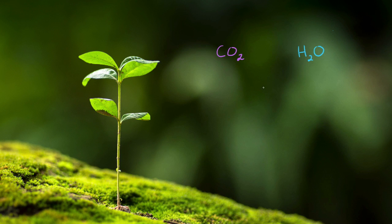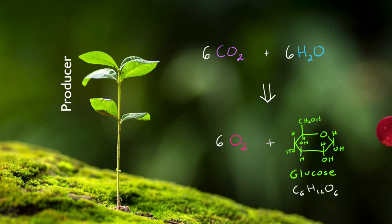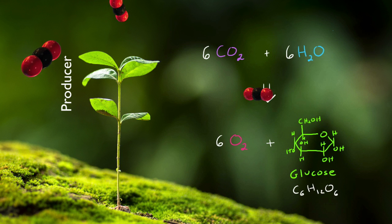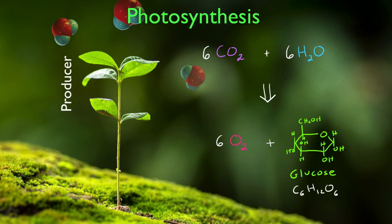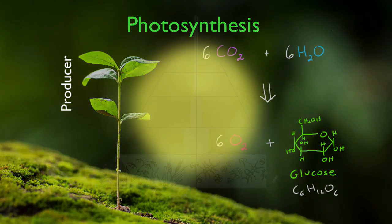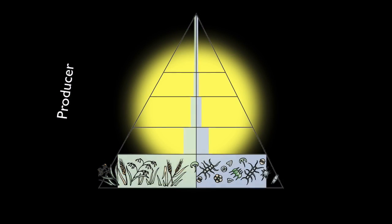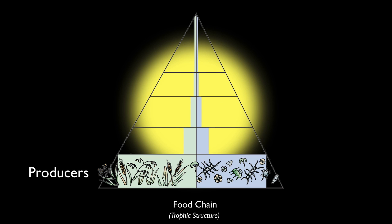Every community needs producers. Producers don't have to eat. Instead, they can make organic molecules out of things like air and water through what you already know to be photosynthesis. Plants and other photosynthesizers are at the base of nearly all food chains.